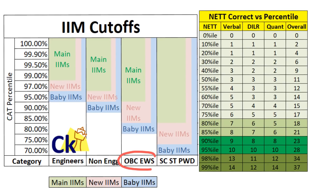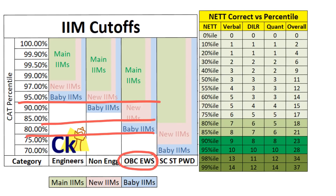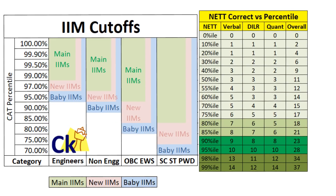Moving to OBC and EWS, this is where the cutoff will lie: 95 percentile for main IIMs. IIM Calcutta can go up to 97, around 96-point-something. New IIMs at 85 percentile, baby IIMs at 80 percentile — 75 may get a call provided you maintain a good sectional cutoff. Otherwise, this is a rough number. 95 percentile means 28 net correct. New IIMs at 85 percentile means 21 net correct, and baby IIMs at 80 percentile means 18 net correct. These are the numbers you need to maintain.